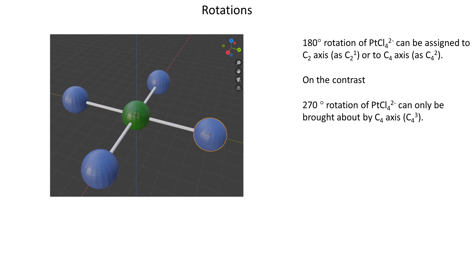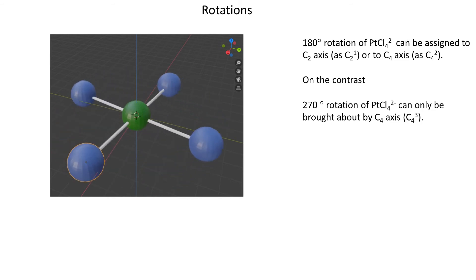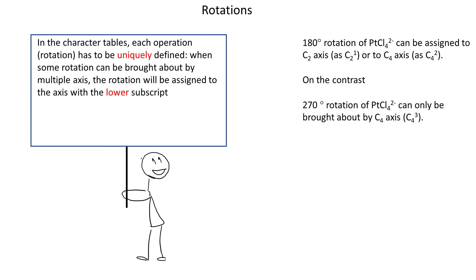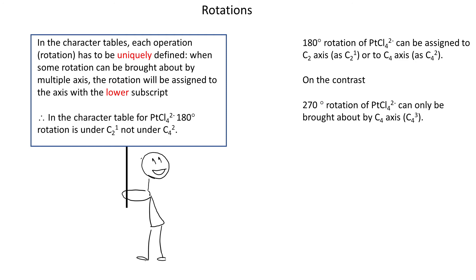By contrast, rotation by 270 degrees can only be brought about by rotating 3 times by 90 degrees around the C4 axis — no other axis can give you this rotation. The last important takeaway is that in the character table each rotation must be uniquely defined. So when a rotation can be brought about by multiple axes, it is assigned to the axis with the lower subscript. Therefore, even though 180-degree rotation of tetrachloroplatinate 2 equals C4² equals C2¹, only C2¹ will appear in the character table.